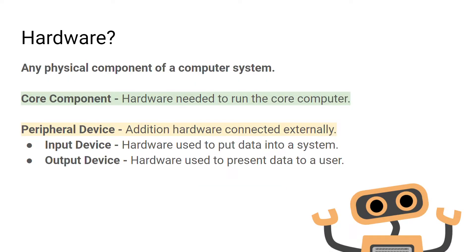Hardware is basically any physical component of a computer system — if you can touch it, it's considered hardware. It is split up into two main categories: core components and peripheral devices.